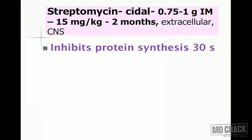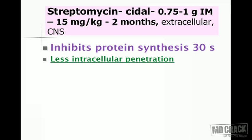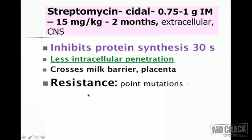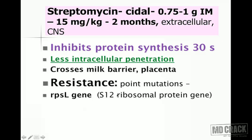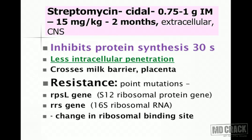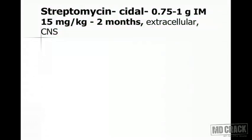The mechanism of action is inhibition of protein synthesis by binding to the 30S ribosomal subunit. Streptomycin can cross the milk barrier and the placenta. Resistance develops through point mutations in the rpsL gene (encoding the S12 ribosomal protein) and the rrs gene (encoding 16S ribosomal RNA), altering the ribosomal binding site.